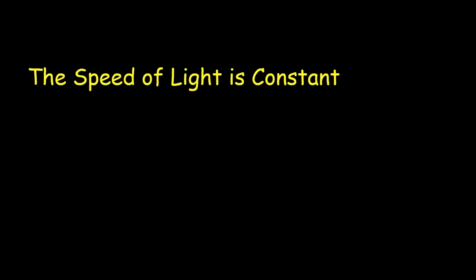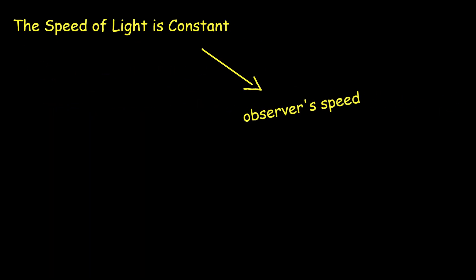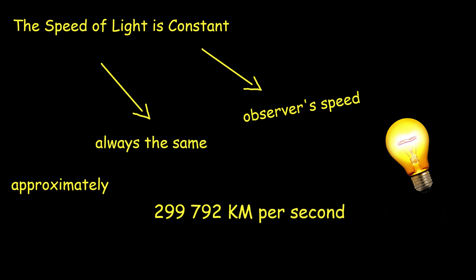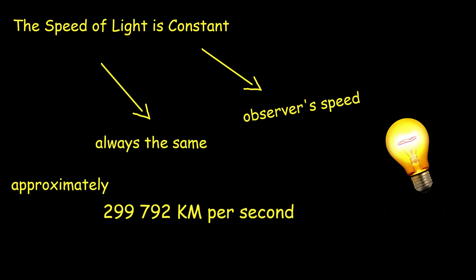The speed of light is constant. Regardless of the observer's speed or the speed of the light source, the speed of light in a vacuum is always the same — approximately 299,792 kilometers per second, or 186,282 miles per second.